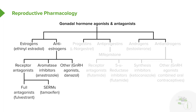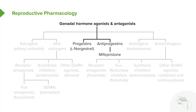Underneath the receptor antagonists section — estrogen receptor antagonists — we have full antagonists and we have selective antagonists. With respect to the progestins, we have actual progestin that we administer and we have an anti-progestin called mifepristone.